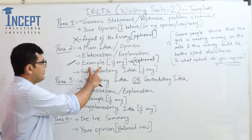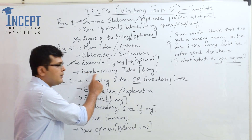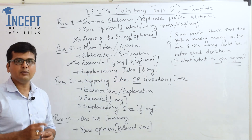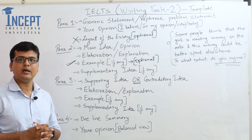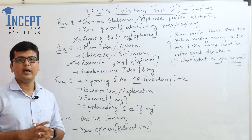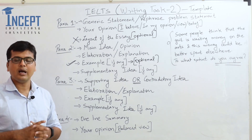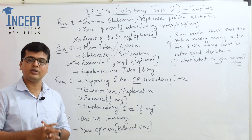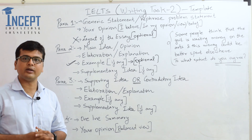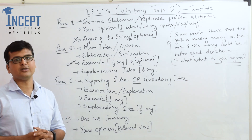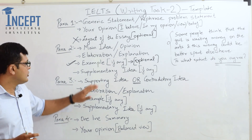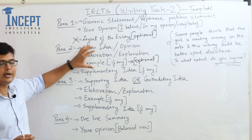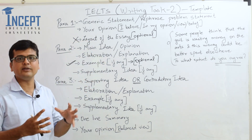After the example, if you have a supplementary idea pertaining to the topic, you can write it down as well. For example: 'Due to resurgent government efforts, many art forms have become popular and this has resulted in increased employment in these art forms. Thus, art forms could also provide an alternate source of revenue and employment for a large number of people.' Again, if you do not have a supplementary idea, you need not write it — it is optional.